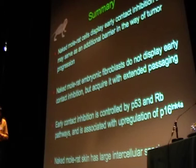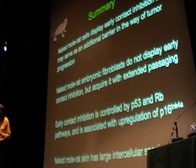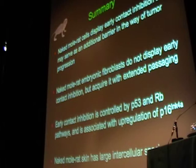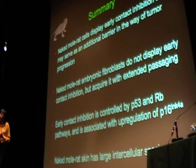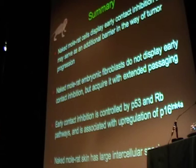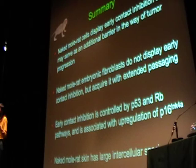In summary: naked mole rats have a unique mechanism of early contact inhibition that serves as an additional anti-cancer mechanism. Embryonic fibroblasts do not have early contact inhibition, but it develops later in development at a stage we have not yet precisely determined. Early contact inhibition is controlled by both the P53 and RB pathways and is associated with upregulation of P16 INK4A. Most likely, the role of P53 is apoptosis — killing cells that escape early contact inhibition as an extra layer of protection. Preliminary results from naked mole rat skin keratinocytes show large spaces between cells, which probably correspond to the early contact inhibition we observe in tissue culture.